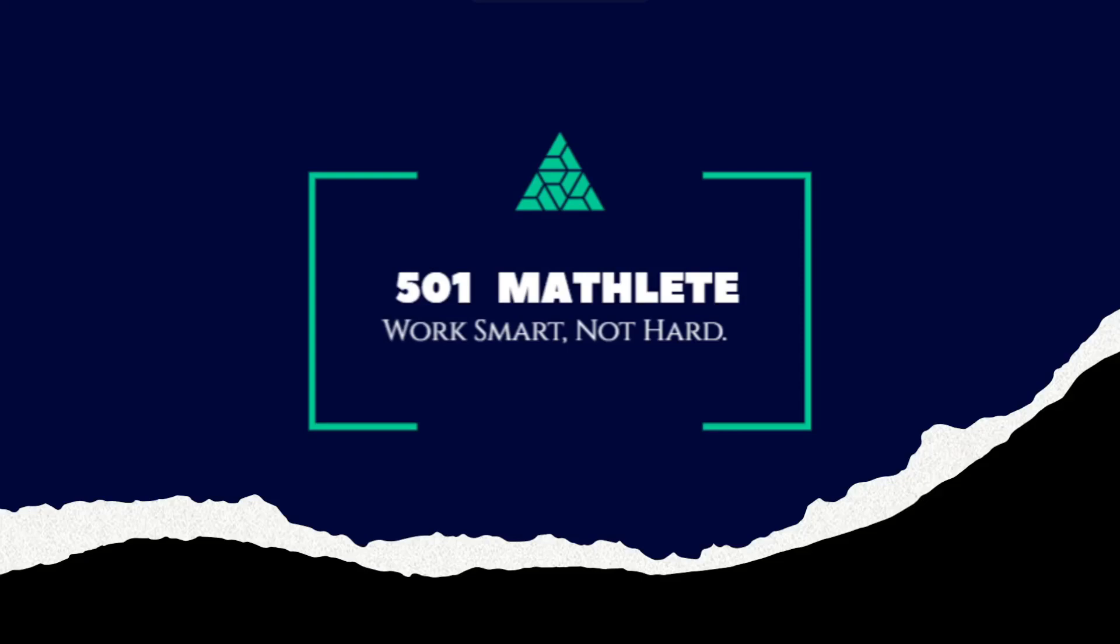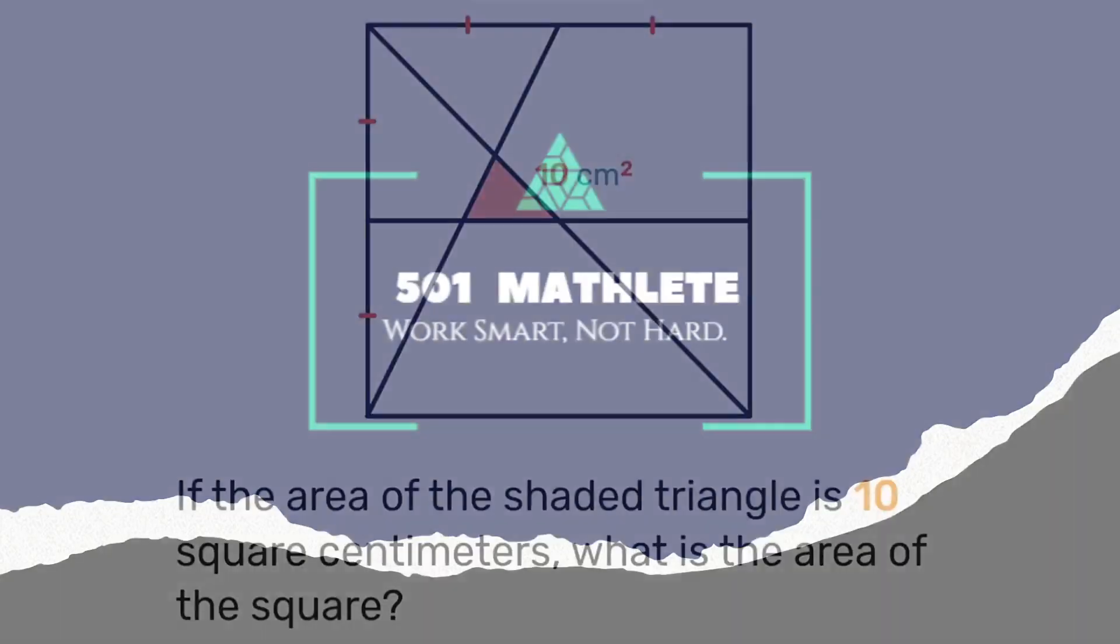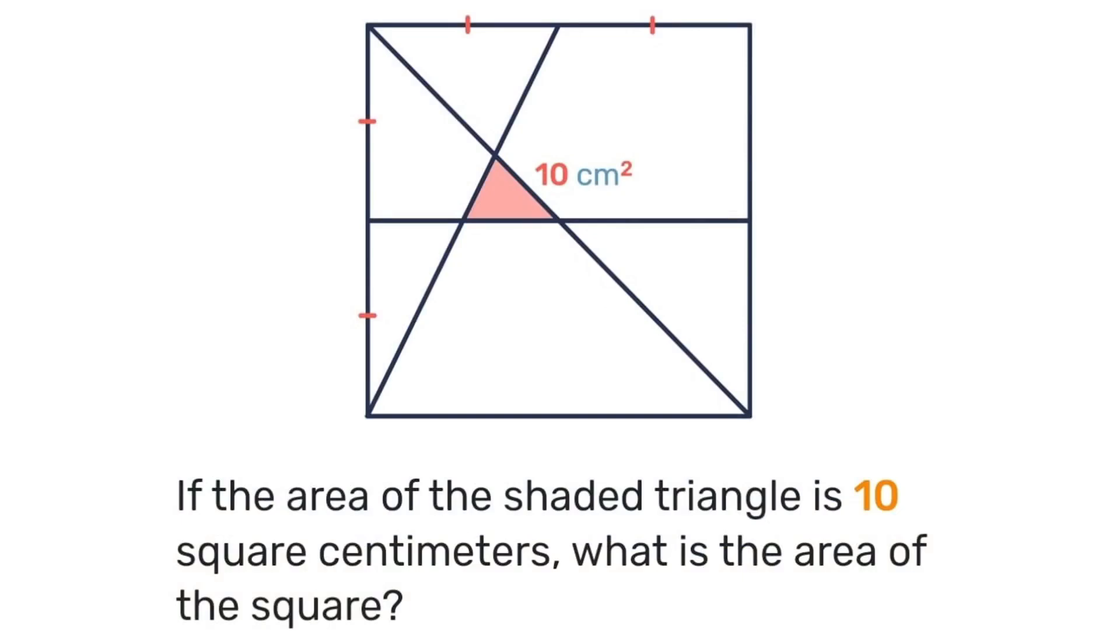Good day and welcome to 501 Matli where we work smart not hard. In today's problem we're given this diagram of a square which has been dissected with three lines and we're told that the area of that shaded triangle is 10 square centimeters. With that we're to determine the area of the entire square. Pause the video here, see what you can come up with.